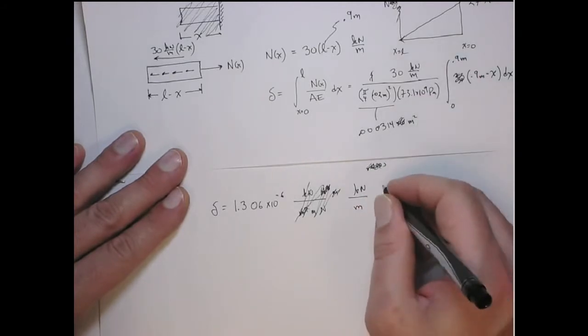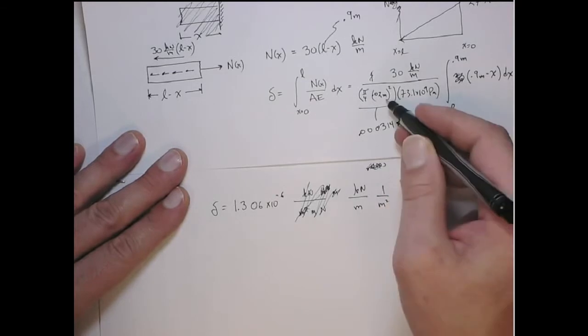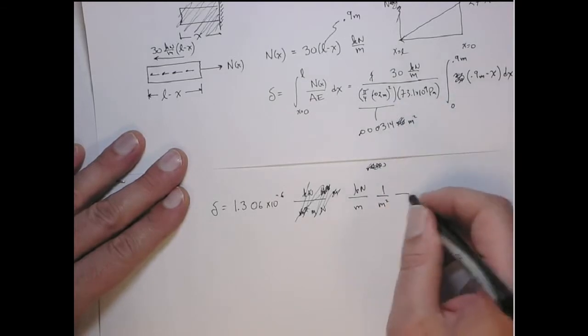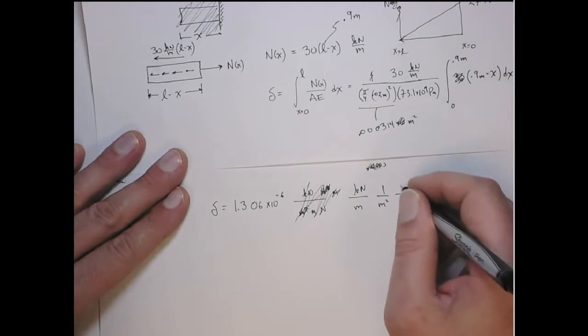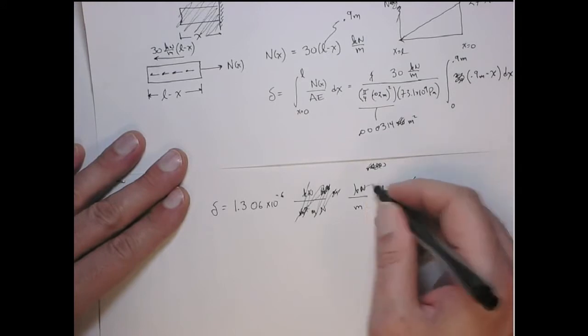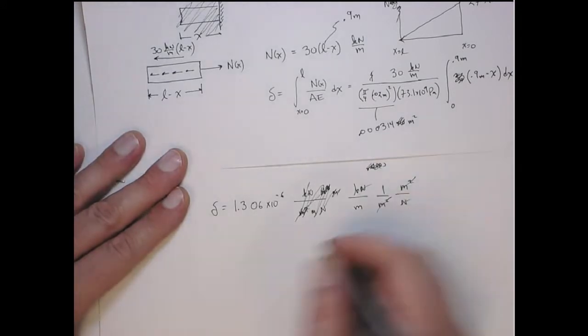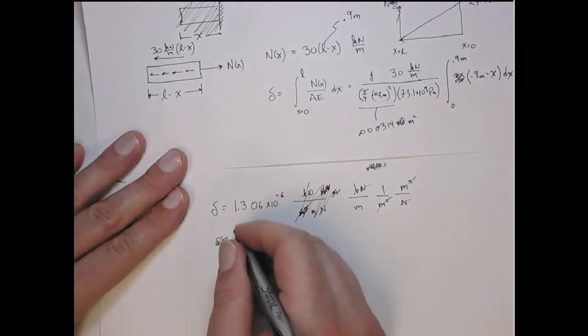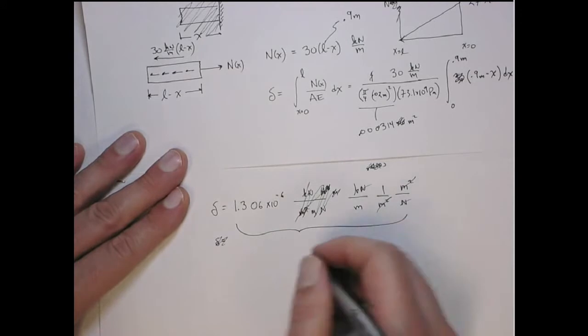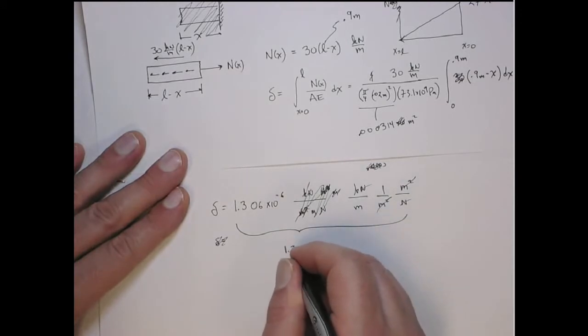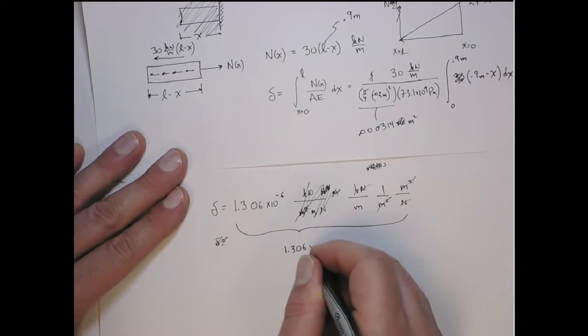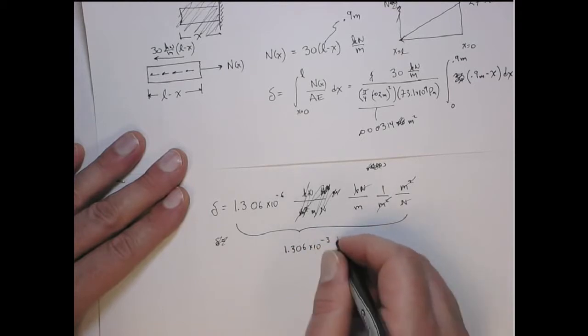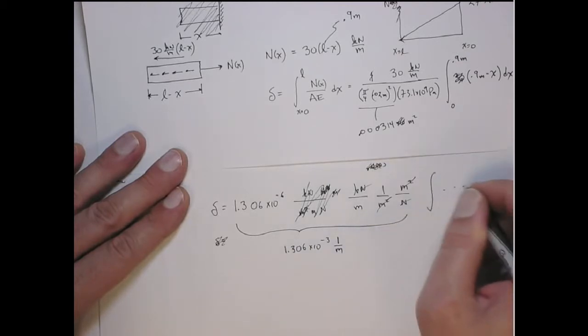Kilonewtons, let me be more careful, over meter. Kilonewton per meter. Then I get on the bottom a meter squared, and for the Pascal I get a newton per meter squared. So these guys cancel out. This cancels out. I get 1,000 up here, so this becomes delta. So this number here turns out to be 1.306 times 10 to the minus third, 1 over a meter. And then I have the integral.